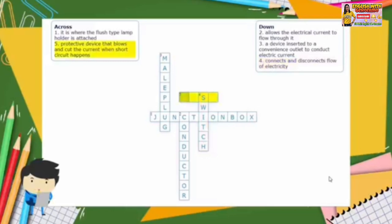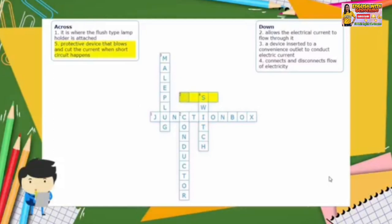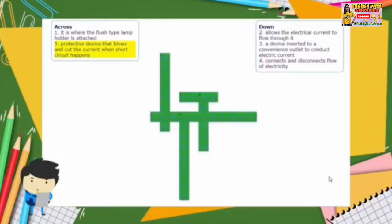And the last item: a protective device that blows and cuts the current when a short circuit happens. The answer is fuse. We did it. Congratulations!